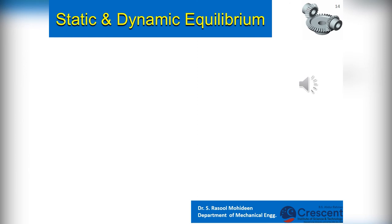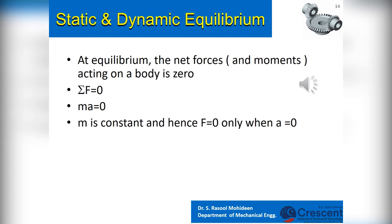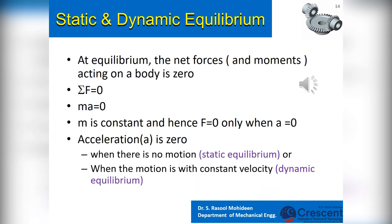Now we will understand the primary condition of equilibrium. At equilibrium, the net forces and moments acting on the body are zero — that is, the summation of all forces equals zero. Since F equals zero, according to Newton's second law (F equals MA), MA equals zero. Since M is constant, F equals zero only when acceleration A equals zero. Acceleration is zero under two conditions: when there is no motion, or when the motion is at constant velocity. The former is known as static equilibrium and the latter is known as dynamic equilibrium.